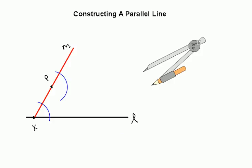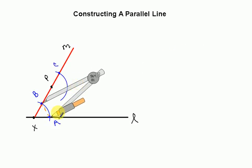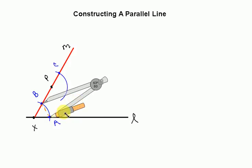Now let's label some points here. I'm going to label this as point A, this as point B, and this as point C. The key to this construction is to find the distance from A to B. If I can get this distance and create that same distance right here, I will have made corresponding angles. So let's take our compass. We're going to place the pivot point at B, and I'm going to adjust this to get the distance from B to A.